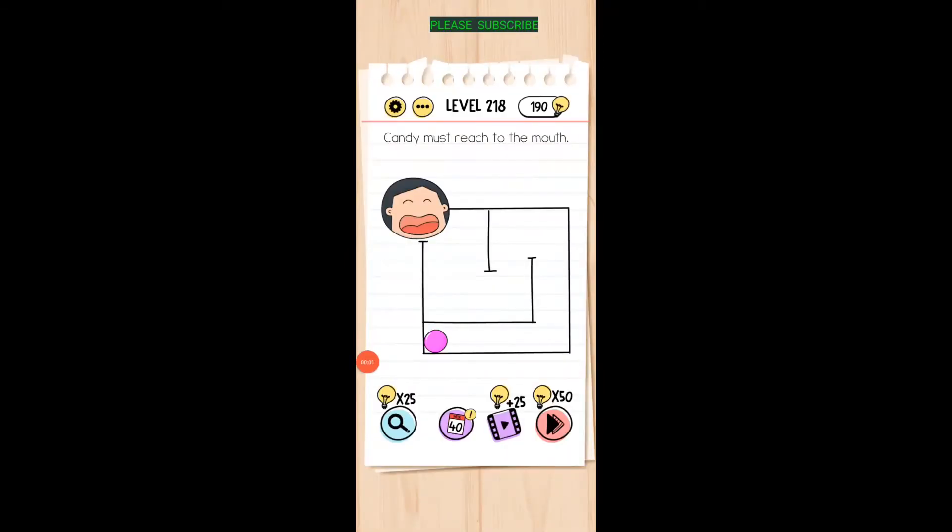Candy must reach to the mouth. All right, tilt your phone over and just kind of keep tilting it the way you would to keep the ball rolling with downward being there, and guide it in just by tilting your phone whichever way to make it roll that way.